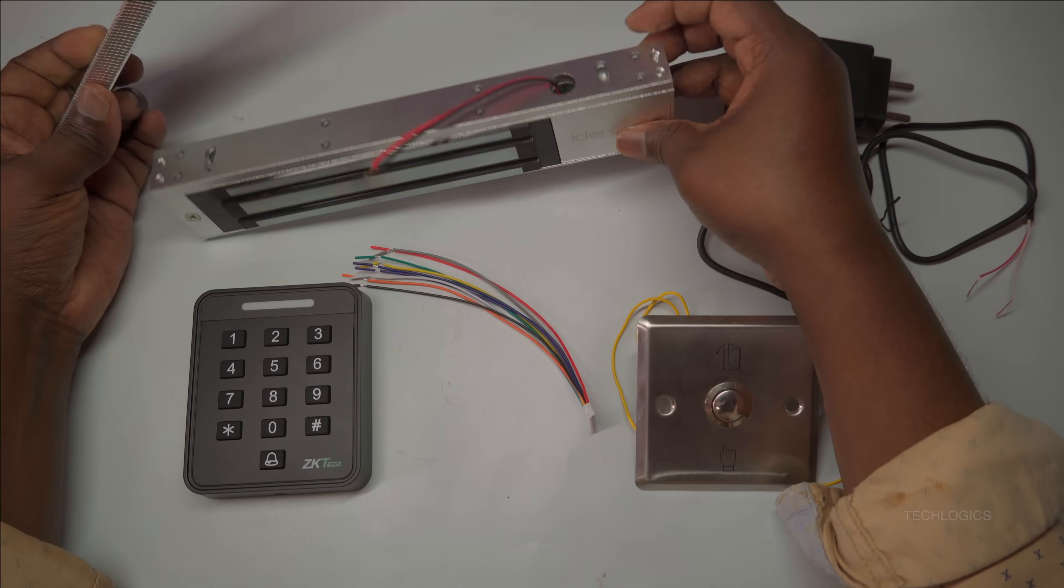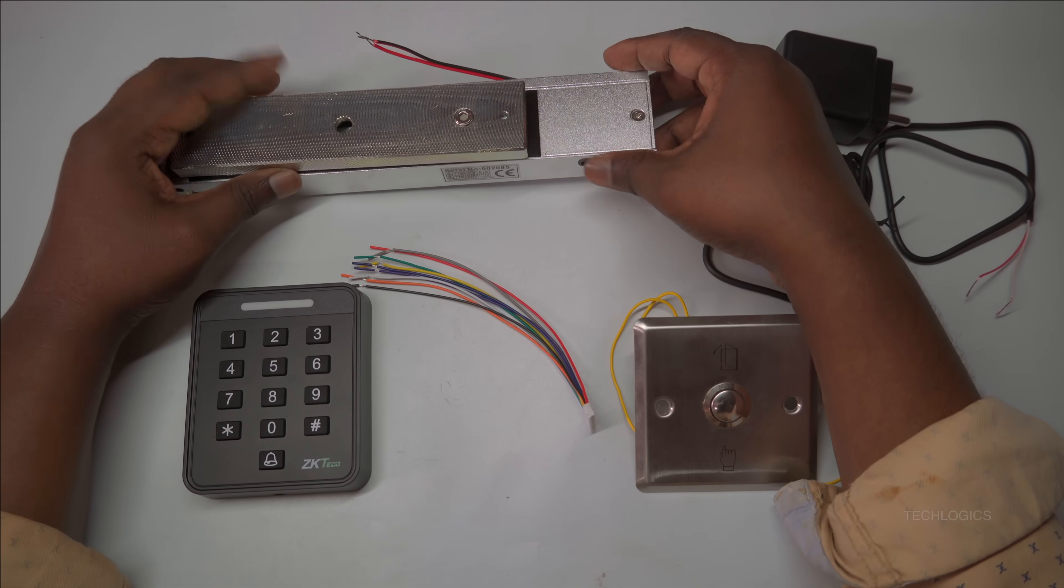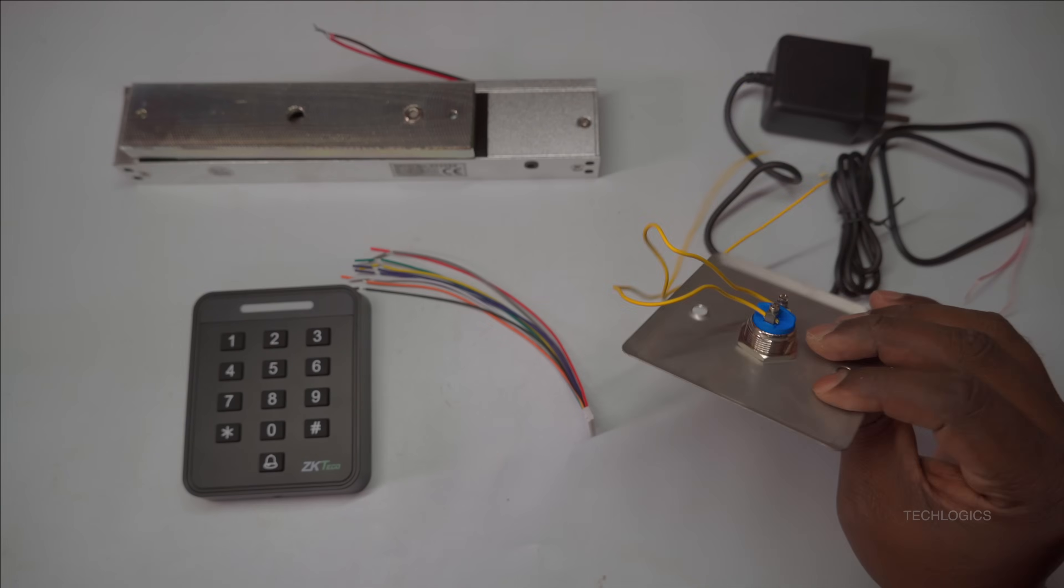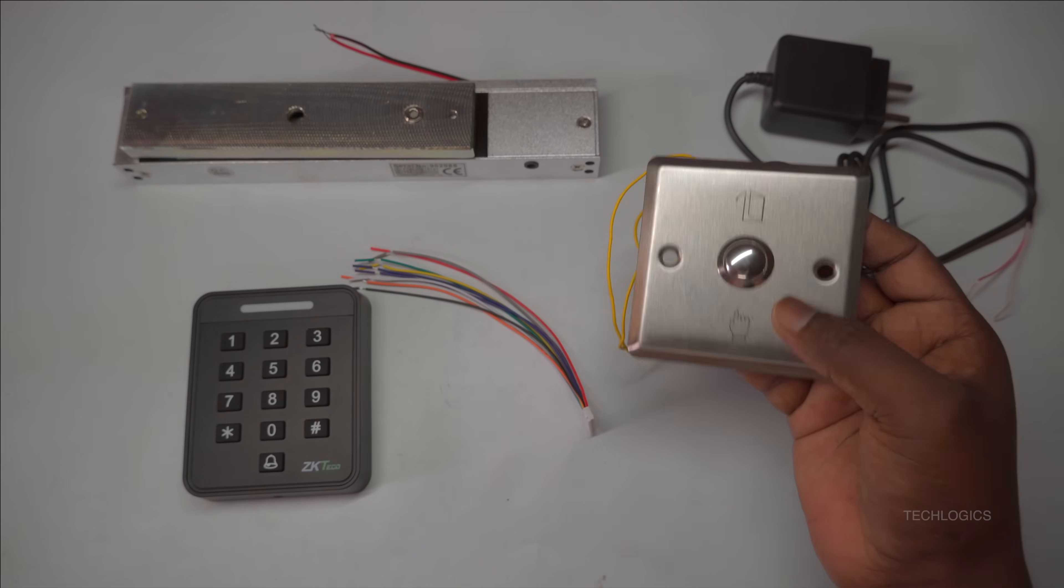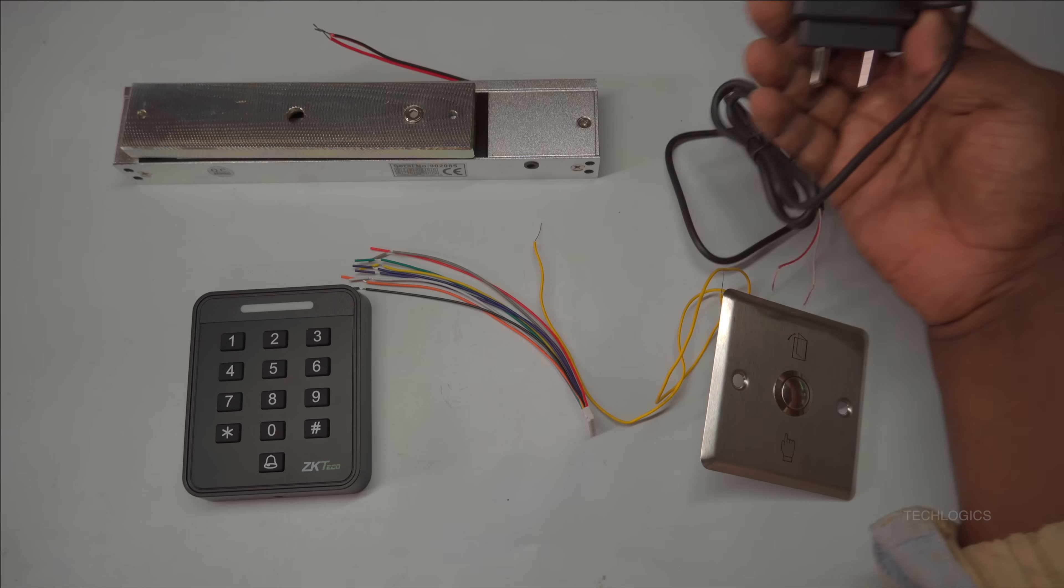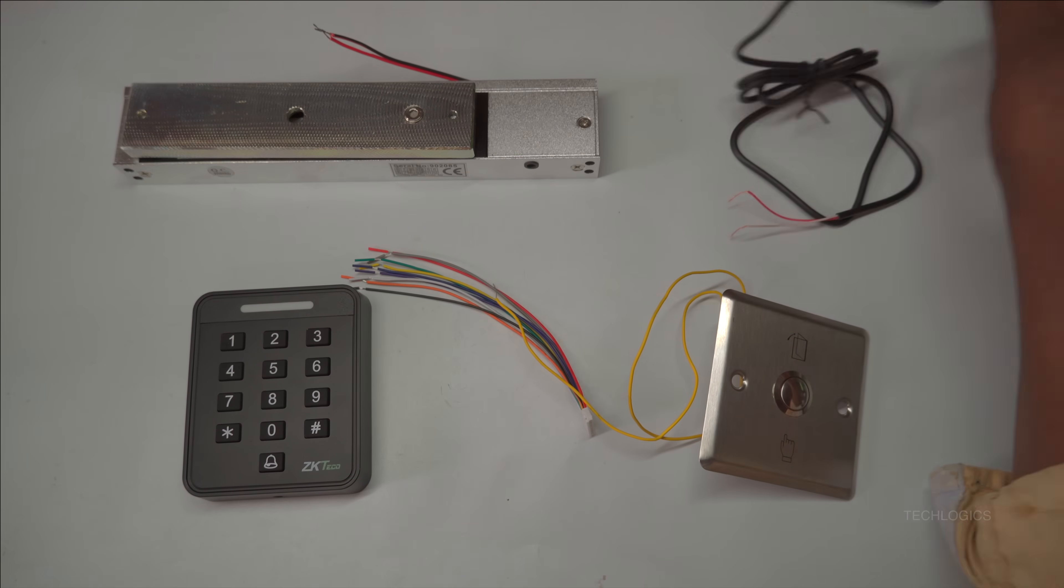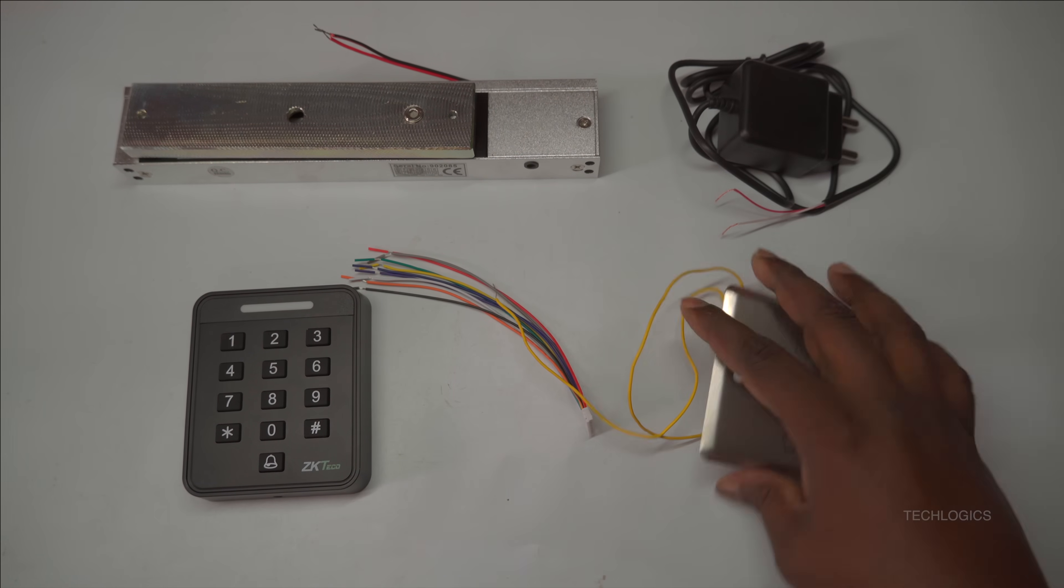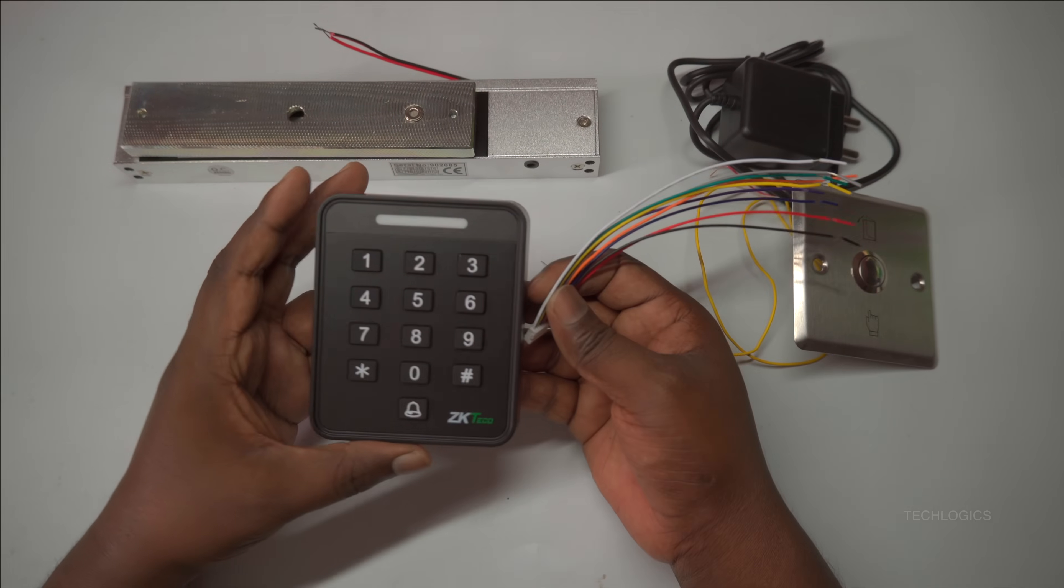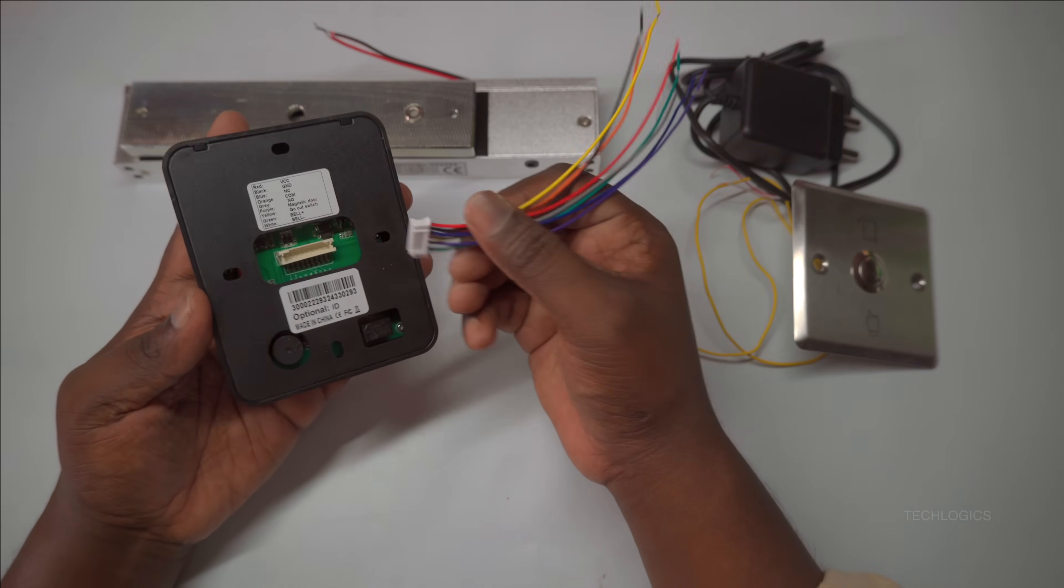Now, let's begin with the wiring process. The first step is to connect the DC power supply to the controller according to the wiring diagram. In this setup, we are using the same power adapter for both the controller and the electromagnetic lock. To ensure optimal performance and reliable operation, it is recommended to use a DC 12-volt power adapter with a current rating between 2 amp and 5 amp.